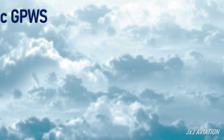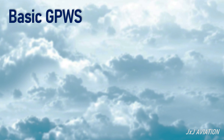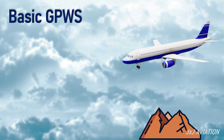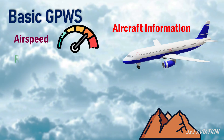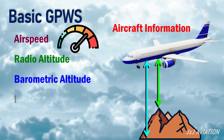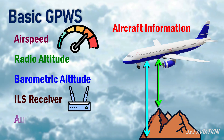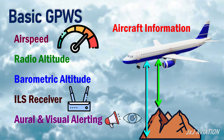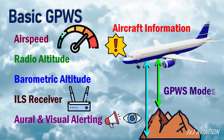Now let's look at the basic GPWS modes. When an aircraft is in flight, the basic GPWS uses different aircraft information or systems such as the airspeed, radio altitude, barometric altitude, ILS receiver, and aural and visual alerting systems to alert the crew. The flight parameters are monitored and verified against warning modes.